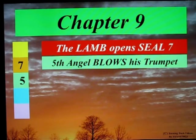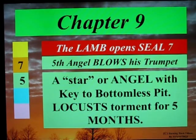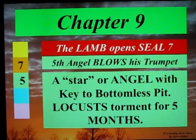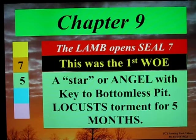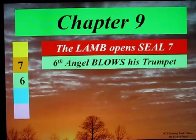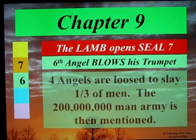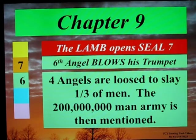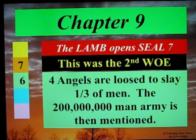The fifth angel blows his trumpet. A star or angel with a key to the bottomless pit is released. He goes to earth and locusts come out of the pit of hell and torment men for five months. This was the first woe. The sixth angel blows his trumpet — four angels are loosed to slay one third of men, and the 200 million man army is then mentioned. This is the second woe.